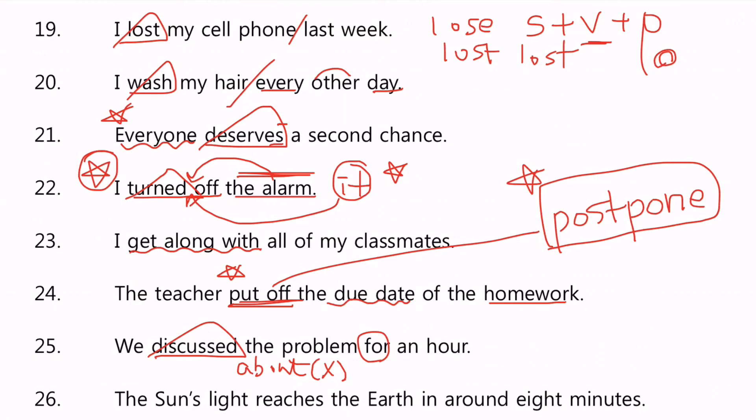이렇게 쓰이는 동사가 몇 개 있는데, 일단은 이것만 암기하세요. We discuss the problem for an hour. 1시간 동안 그 문제를 토론했다. About 이런 식으로 쓰면 틀린다.